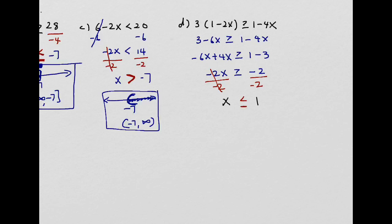To graph this, place 1 on the number line. x is less than or equal to 1 — smaller means the left side. Since there's an equal sign, use a bracket. For the interval notation, it goes all the way to negative infinity with a parenthesis, up to 1 with a bracket.